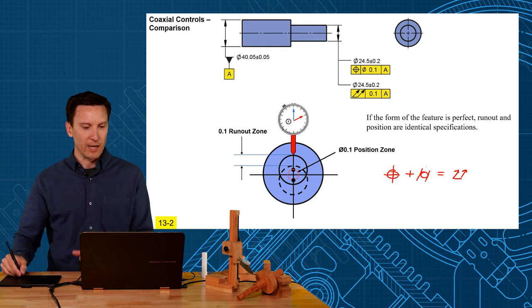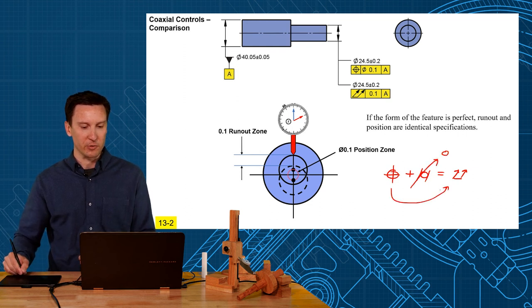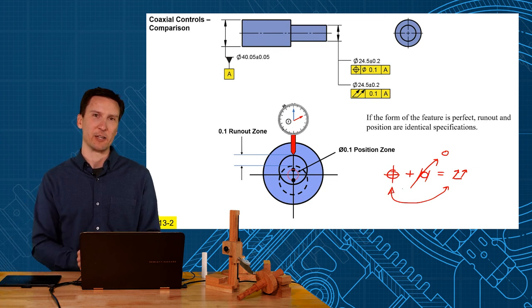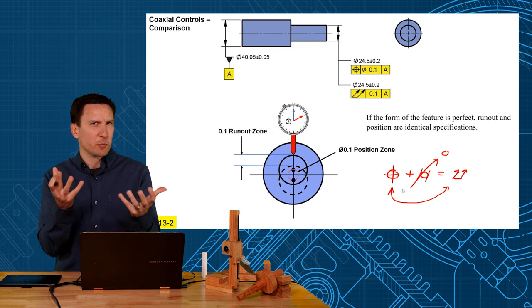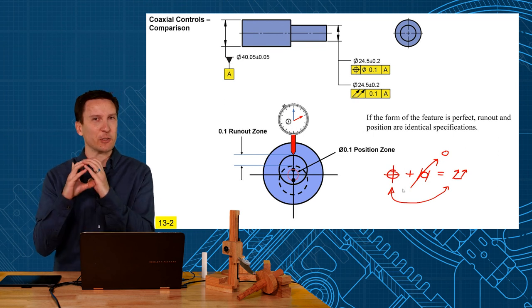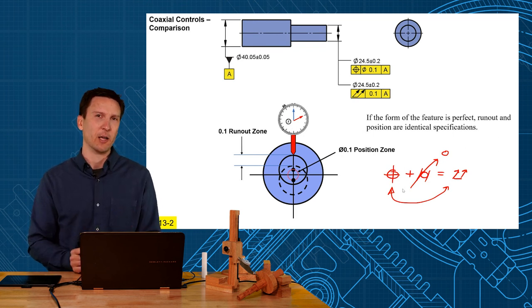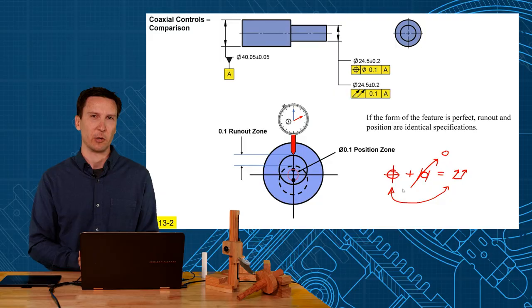So in this example, I said, well, the form is perfect, so that's zero. So can you see how position and run-out would be identical specifications? So whether I should use position or run-out, sometimes it doesn't really matter that much. It's only small run of form error anyway. So run-out in position, very simple.